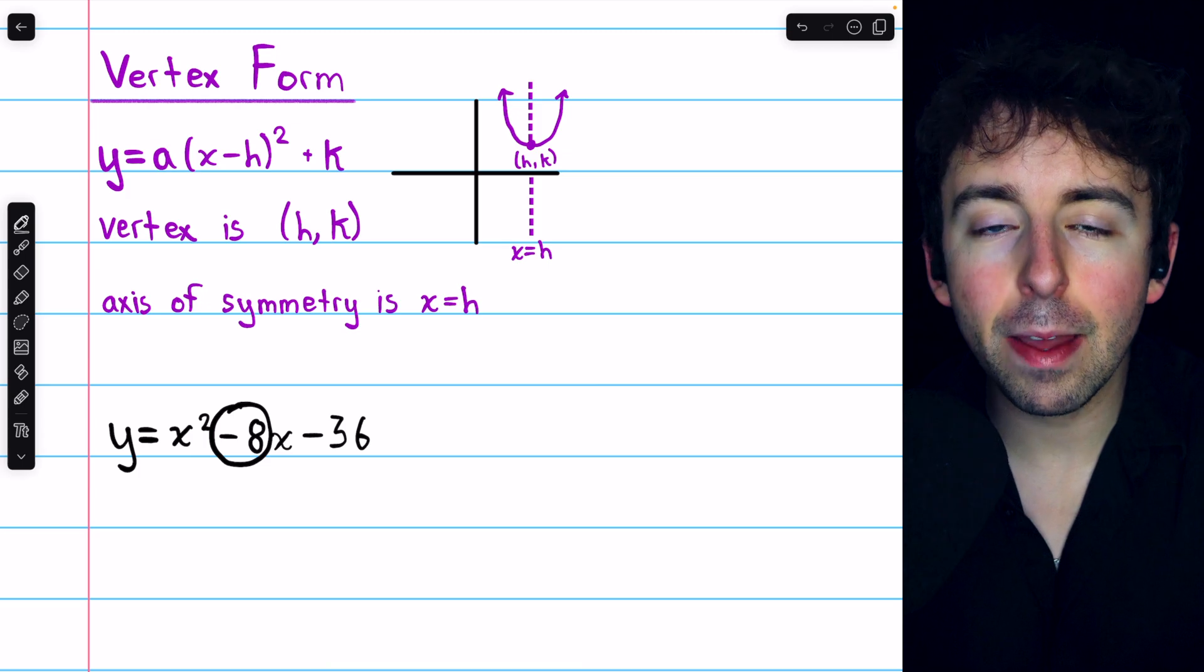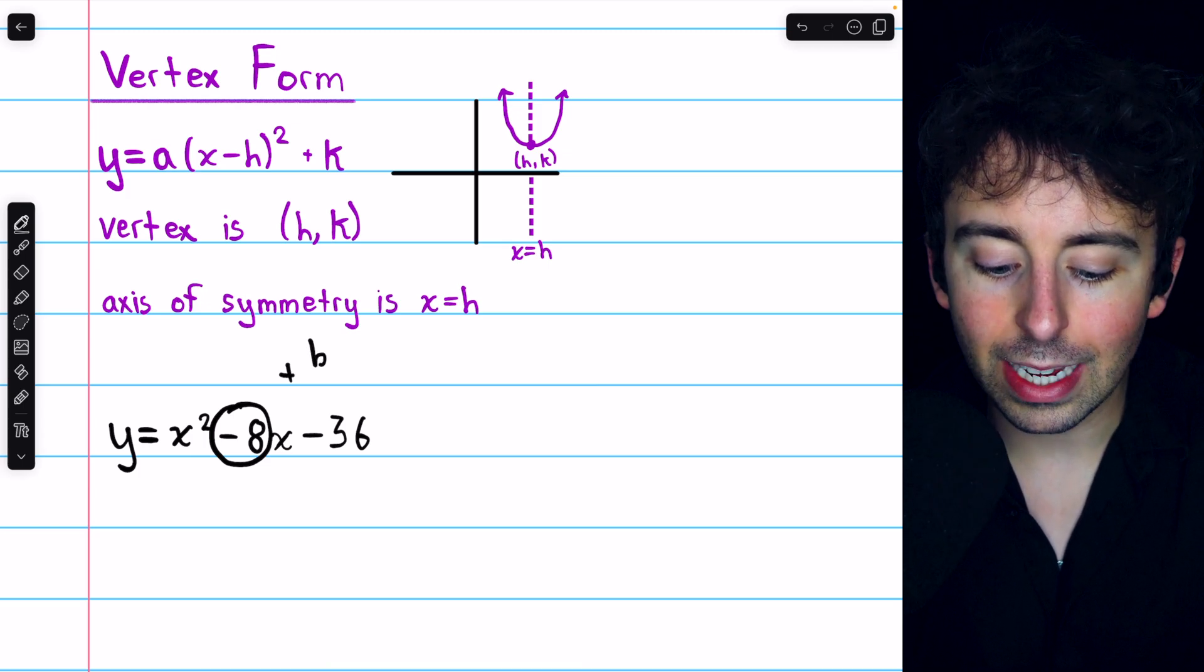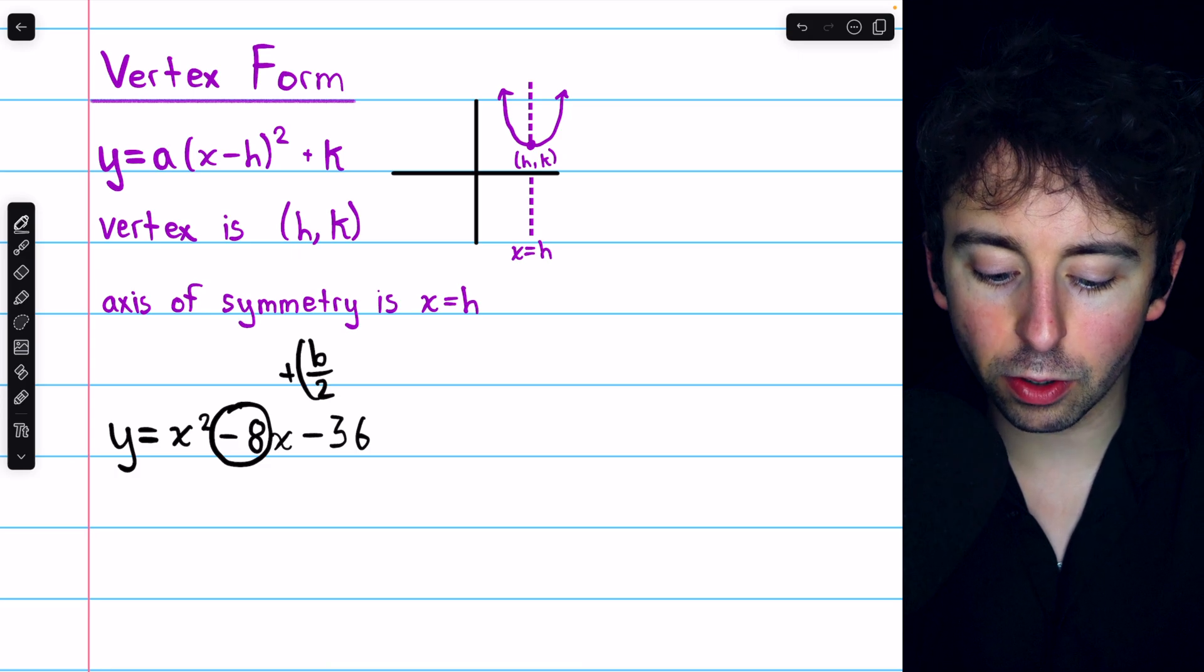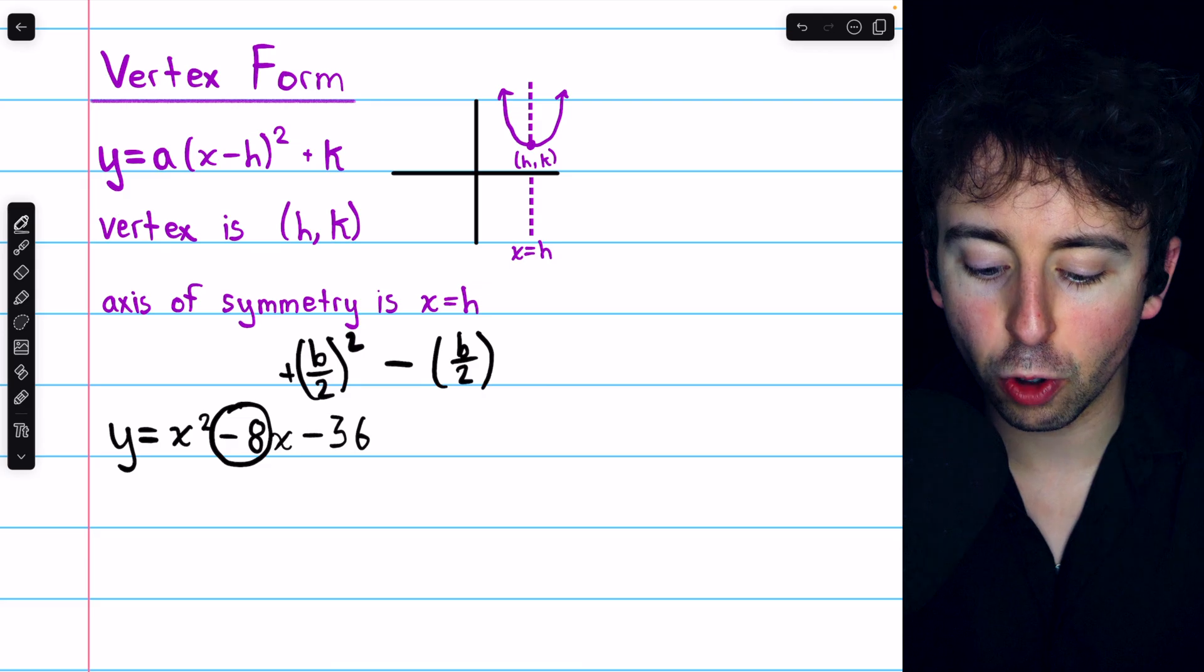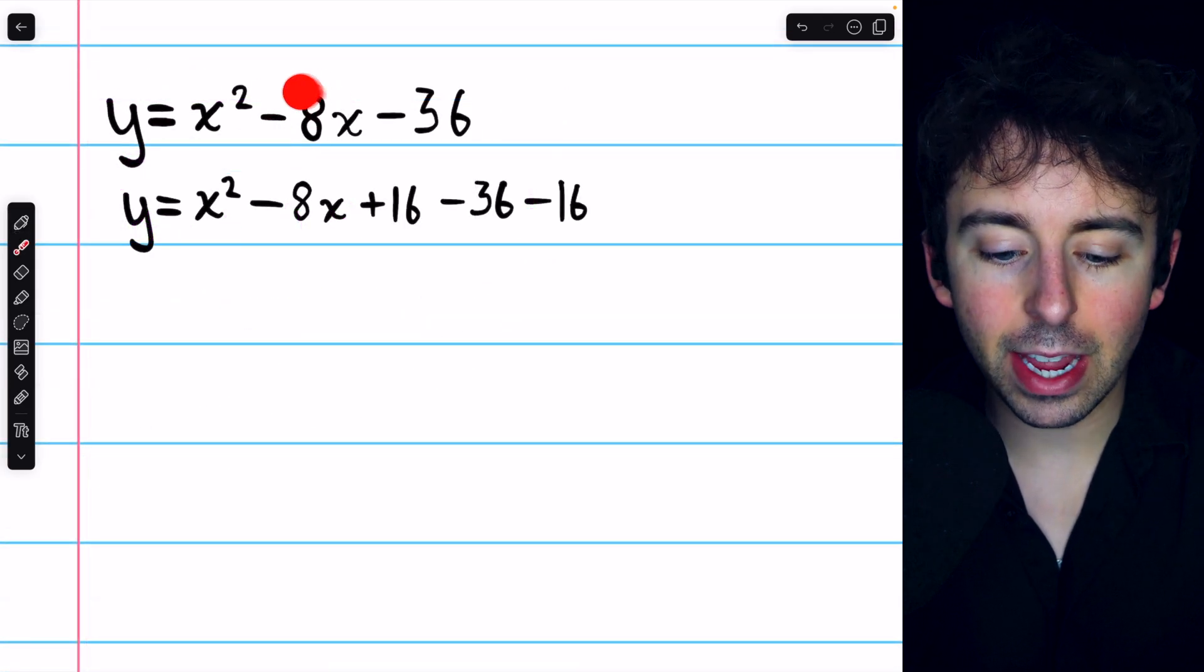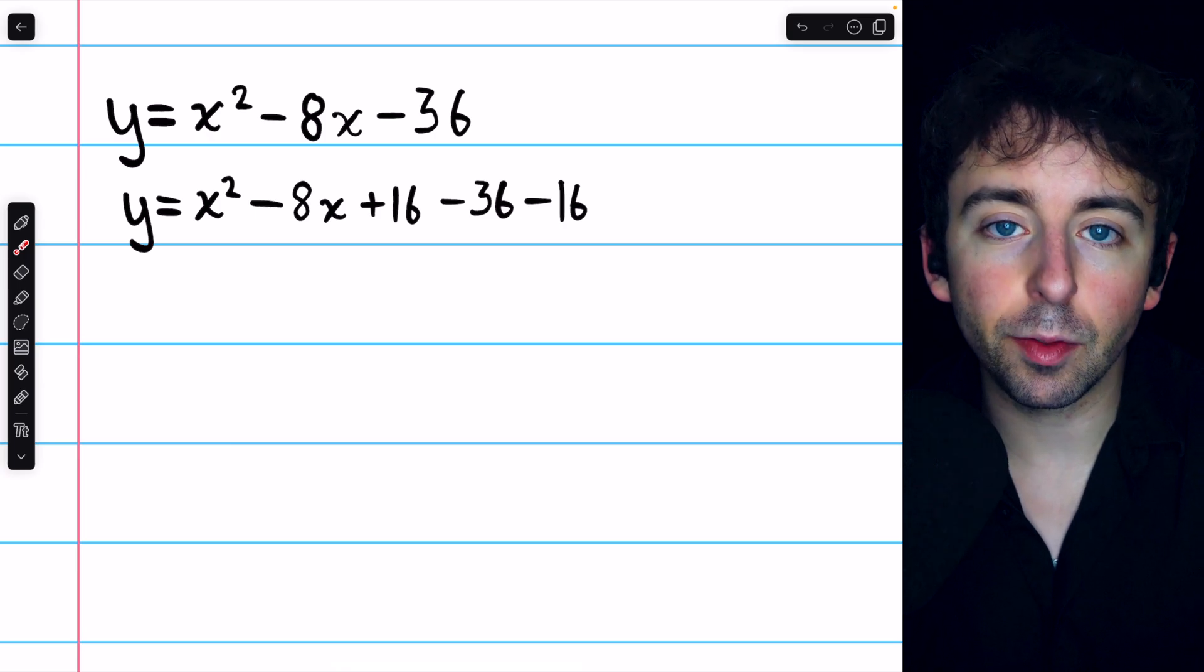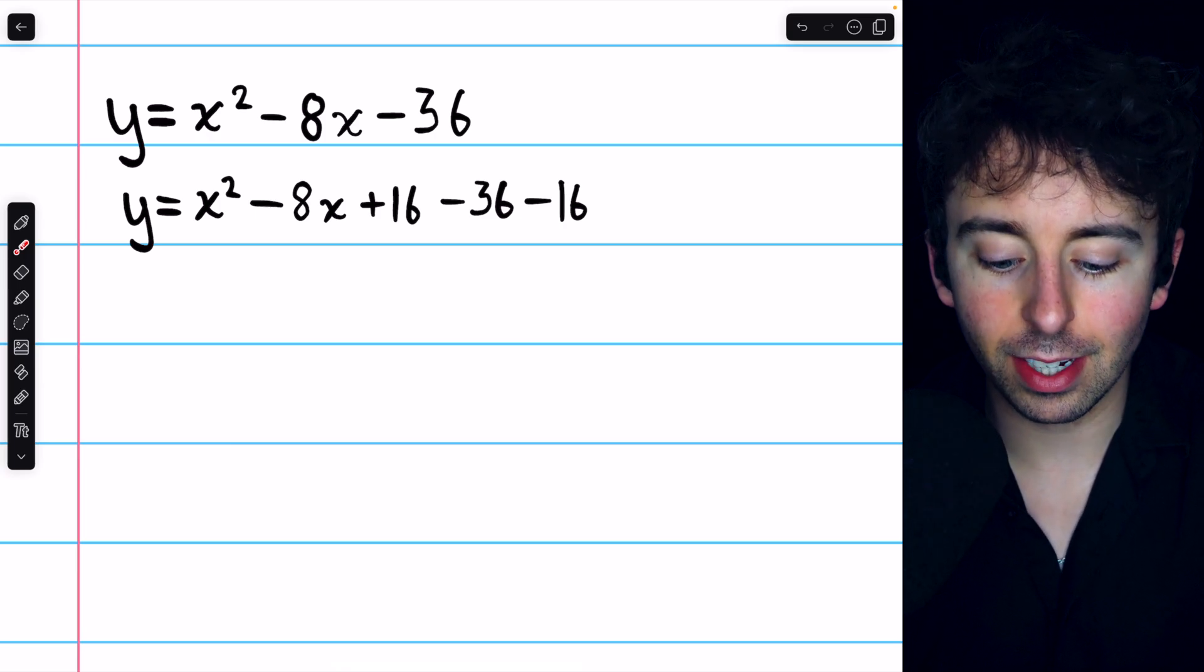So identify b, which in this case is negative 8, and then what we'll do is add b over 2 squared, and then so that we're not changing anything, we will also have to subtract b over 2 squared. Since b is negative 8, b over 2 is negative 4, and so b over 2 squared is positive 16.